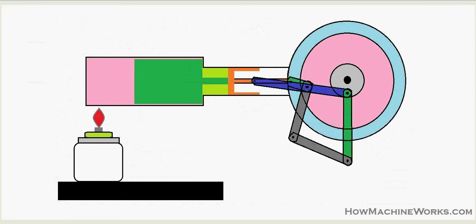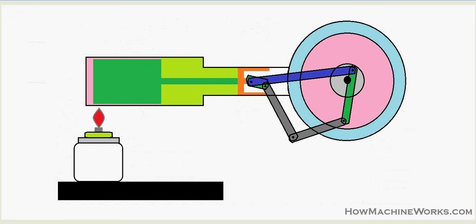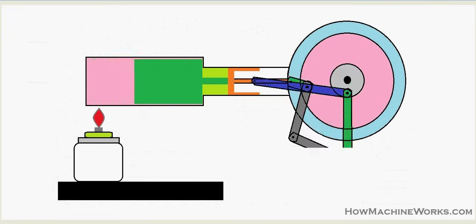Both the displacer piston in green and the power piston are connected to links. The green link is connected to the displacer piston, and the blue link is connected to the power piston. The power piston link is connected towards the disc — it takes away energy from the power piston and gives it to the disc. The disc functions like a flywheel, storing this energy. We have five links in total: one connected to the displacer piston and the green link connected to the power piston.